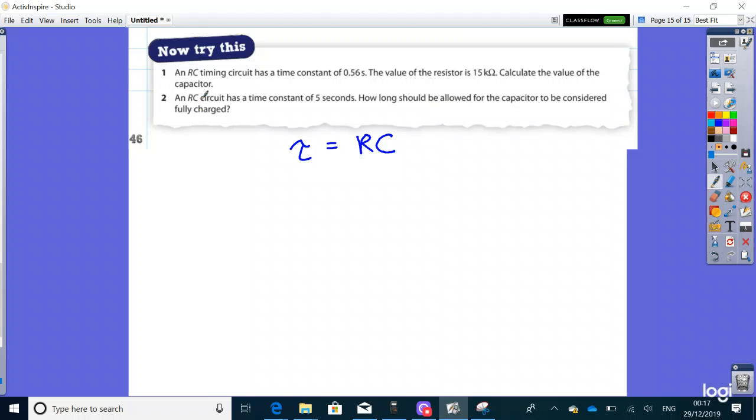So an RC timing circuit has a time constant of 0.56 seconds. The value of the resistor is 15 kilo ohm, so 15 times 10 to the power of 3. Find the capacitor value.